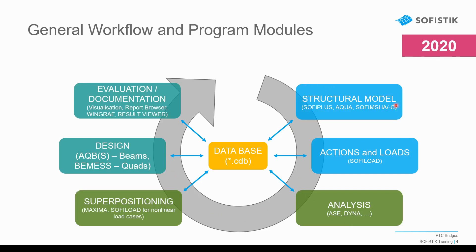It's very important to understand the order or sequence in which we execute the modules. For example, we cannot perform an analysis if we haven't yet defined the loads on our structure. Similarly, to perform element design, we can only do that after superimposing results — otherwise we'll get a warning that there are no available results. This little overview will help you understand warnings or errors from SOFiSTiK later on.